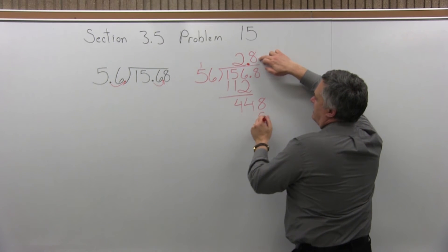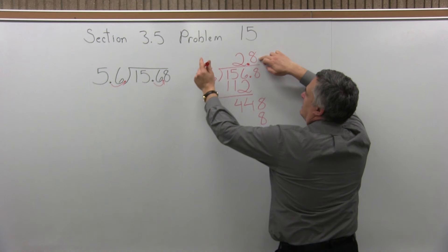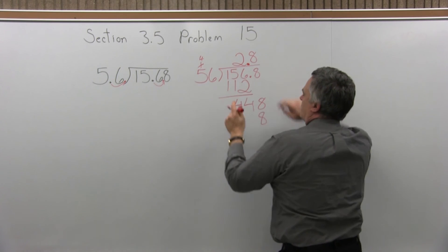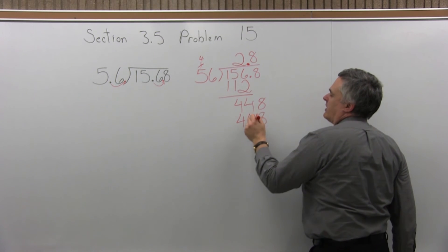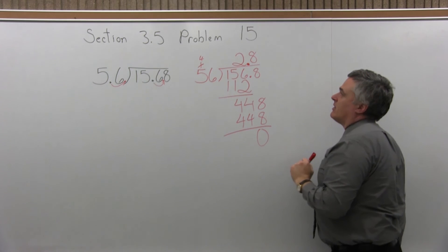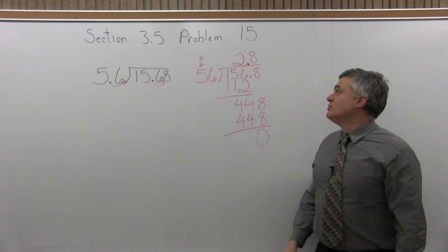8 times 6 is 48. For 48, write the 8, carry the 4. 8 times 5 is 40. 40 plus 4 more that we carried is 44. And now if you subtract, everything lines up nicely. You have a remainder of 0. So the answer is 2.8.